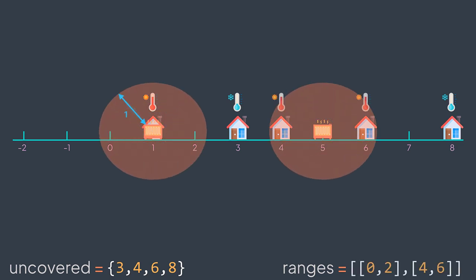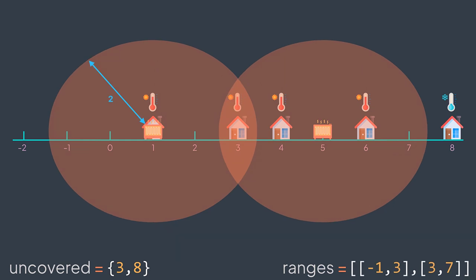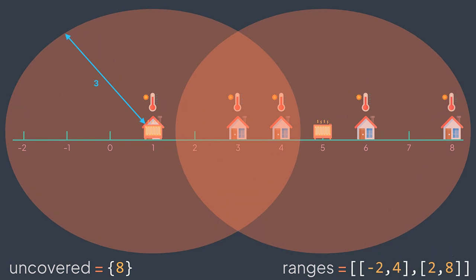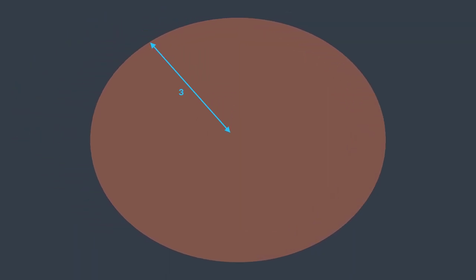Now we increase the radius: we modify the ranges by decrementing the left boundary and incrementing the right boundary. Heater one now covers from zero to two and heater two covers from four to six. The newly covered positions are zero, four, and six — we remove houses at these positions. The uncovered set isn't empty yet, so we continue incrementing the radius. The ranges become [-1,3] and [3,7]. In newly covered positions we find house three and remove it. We continue incrementing — ranges become [-2,4] and [2,8]. In newly covered positions we find house eight, remove it, and the uncovered set is empty. The radius is three — we need at least three to cover all the houses.